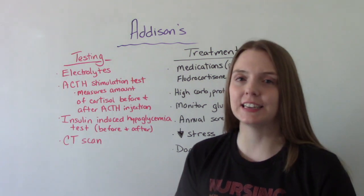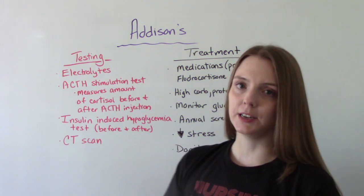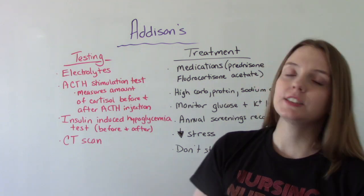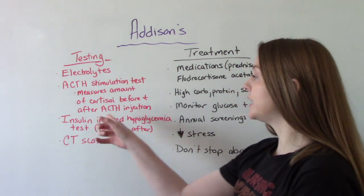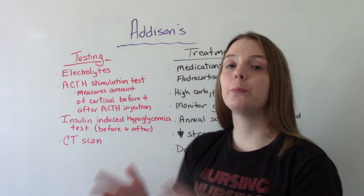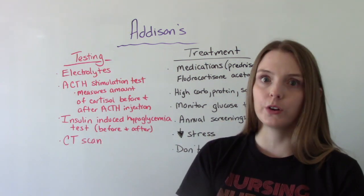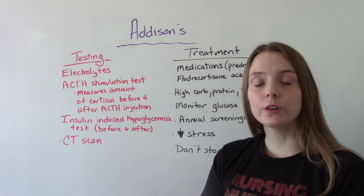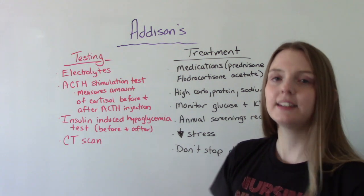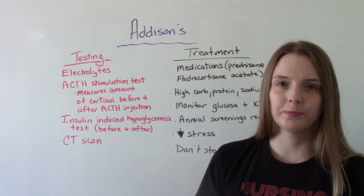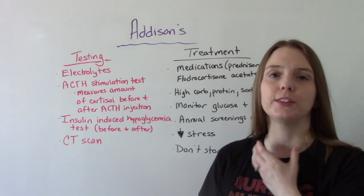For diagnostic testing, we check electrolyte levels since potassium and calcium may be elevated. We perform the ACTH stimulation test — cortisol levels are measured, synthetic ACTH is administered, and then levels are measured again. There's also the insulin-induced hypoglycemia test, where cortisol and blood sugar are measured before and after giving insulin. A CT scan may also be done to evaluate the adrenal glands and check their overall size.